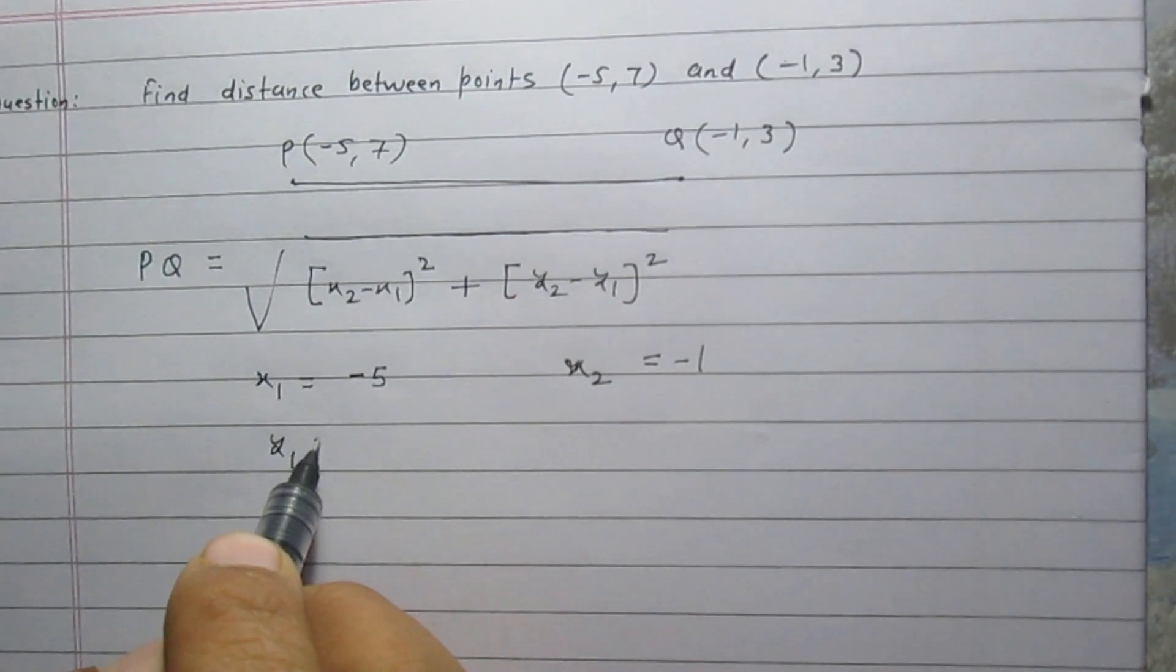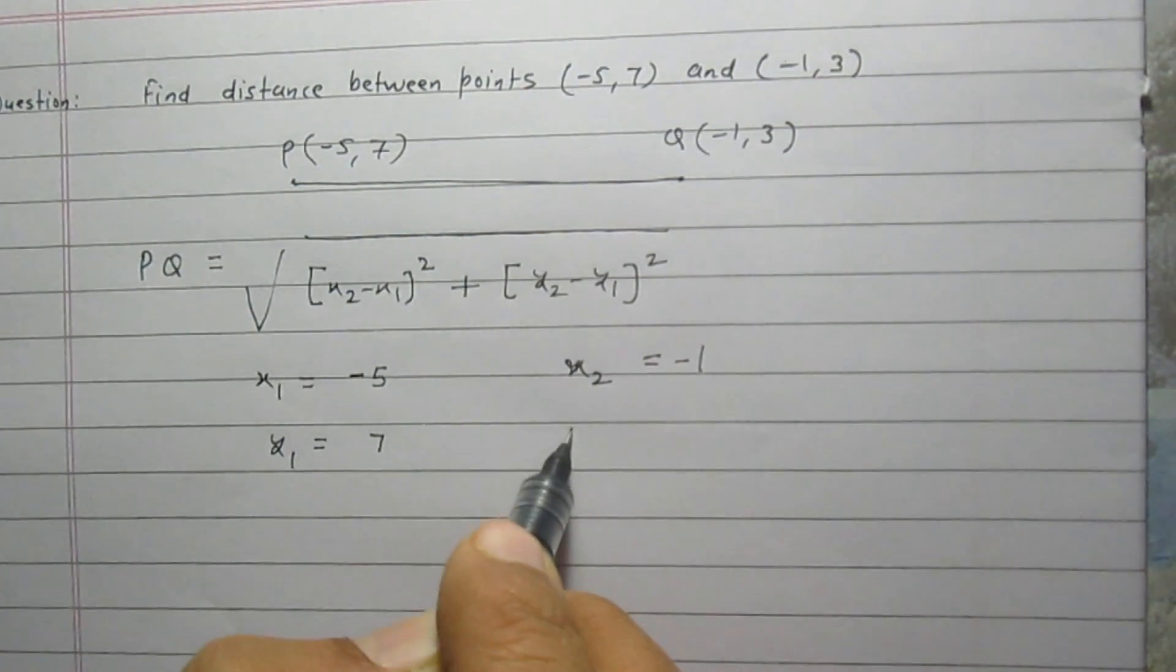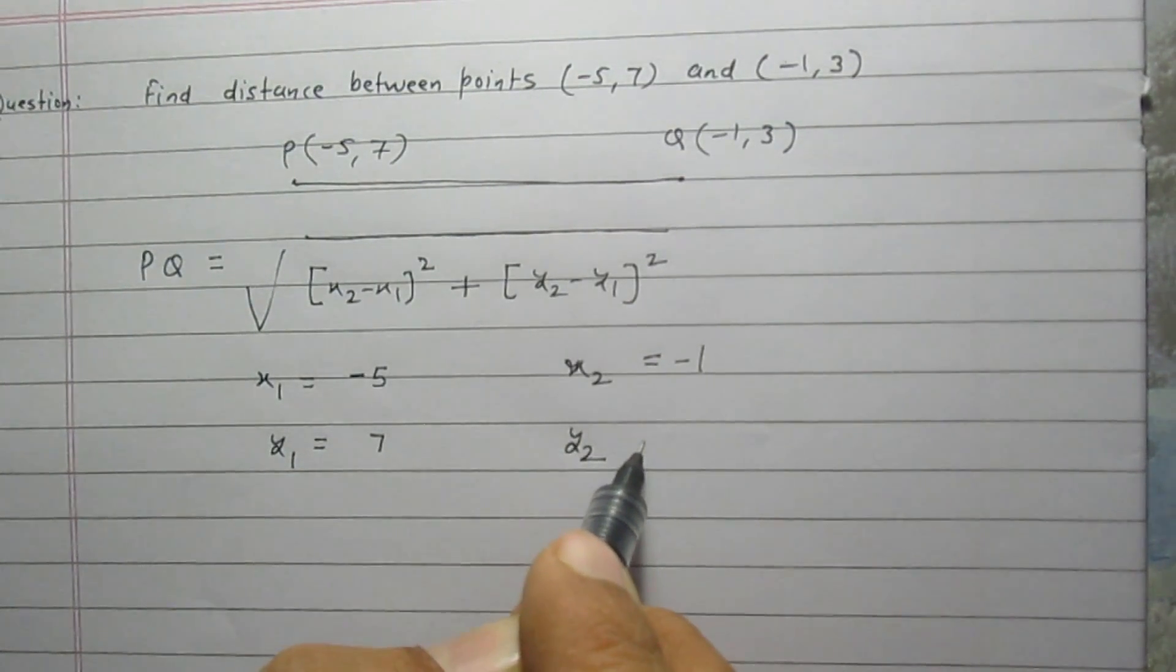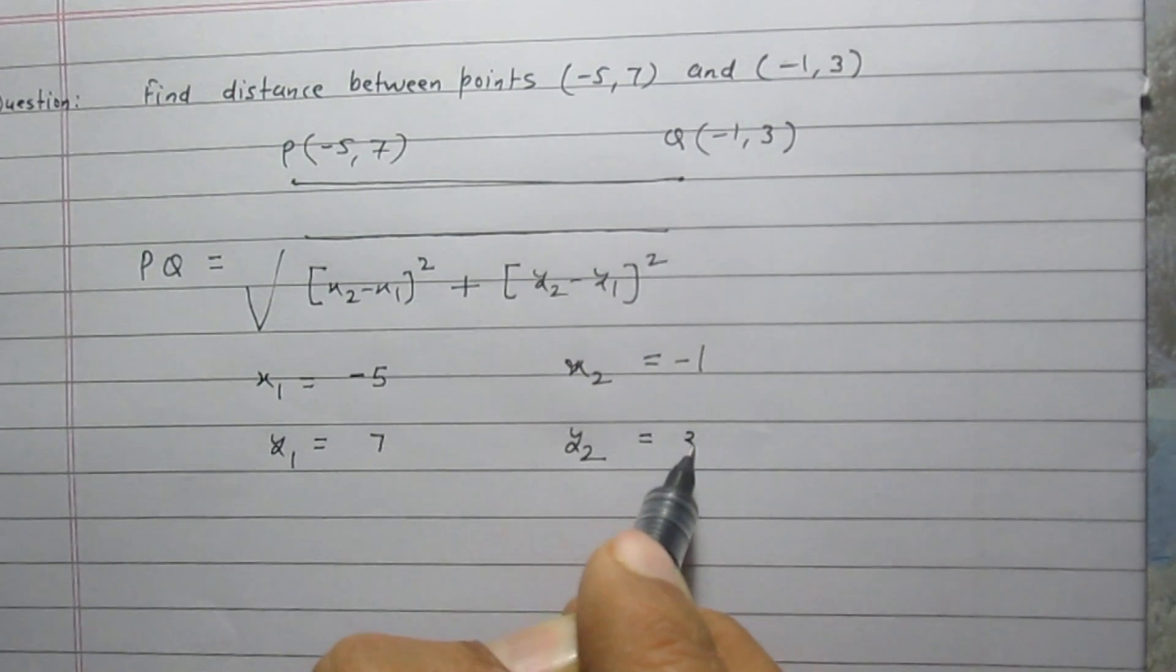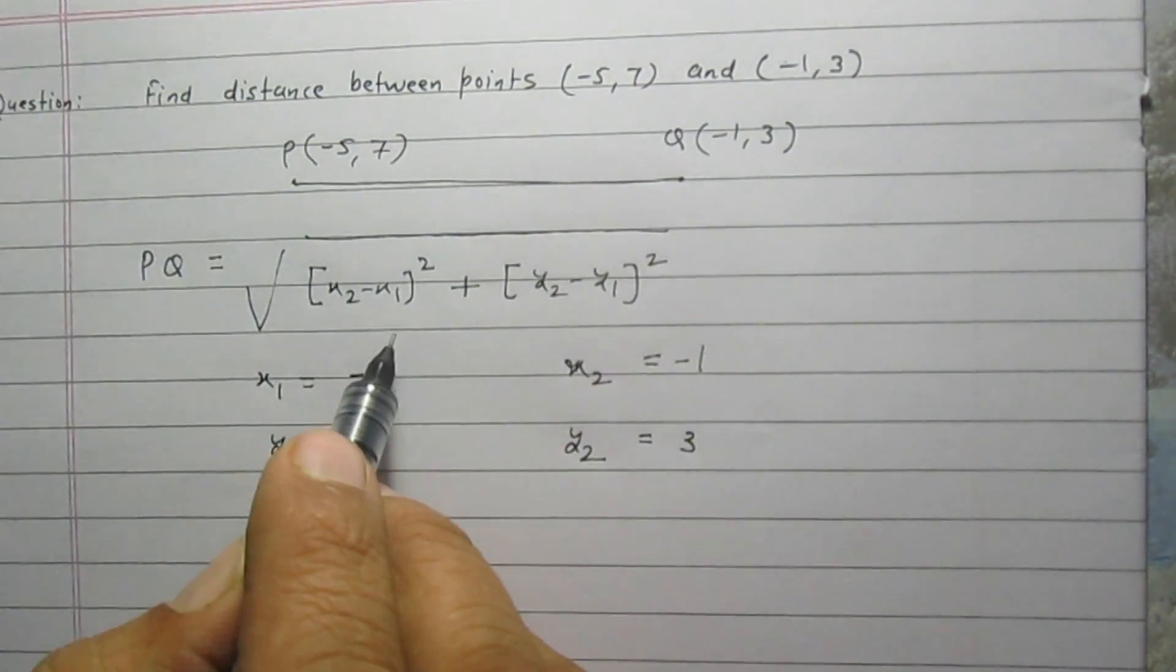y₁ is the y-coordinate of first point which is 7, and y₂ is the y-coordinate of second point Q and it is 3. After substituting these values in the distance formula,